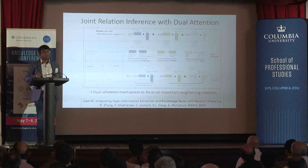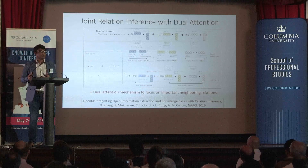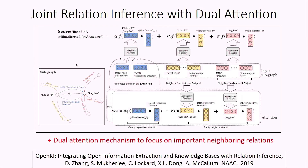Not all relations are equally important in the neighborhood of an entity — some are more important than others. For example, Steven Spielberg as a director should have much more prominence than Steven Spielberg as an actor. So we need to attend to specific relations in the neighborhood of an entity. We developed a dual-attention mechanism to perform this task, and this is work we are going to present at ACL later this year.